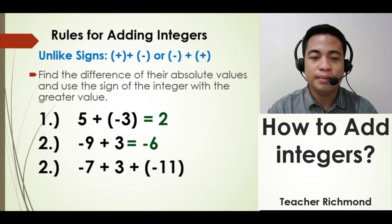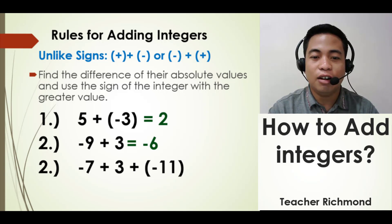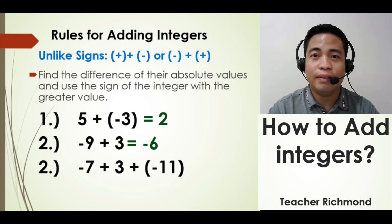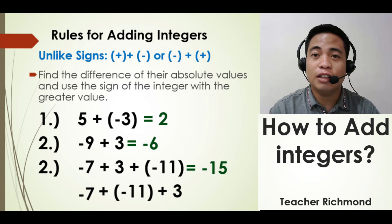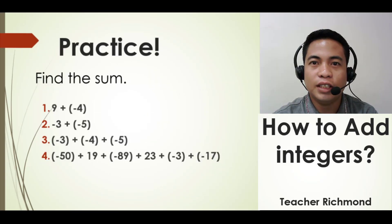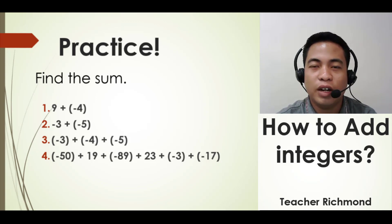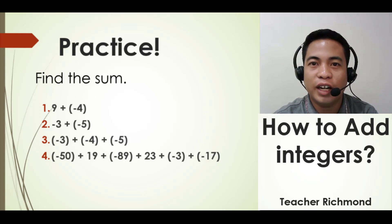For the next example: negative 7 plus positive 3 plus negative 11. My technique is to first combine all integers with the same sign. Combine negative 7 and negative 11 to get negative 18, then add positive 3. Since we are adding unlike signs, get the difference: 18 minus 3 equals 15, and the sign of the greater value is negative, so the answer is negative 15. That is how we add integers. I will now give you some practice problems.